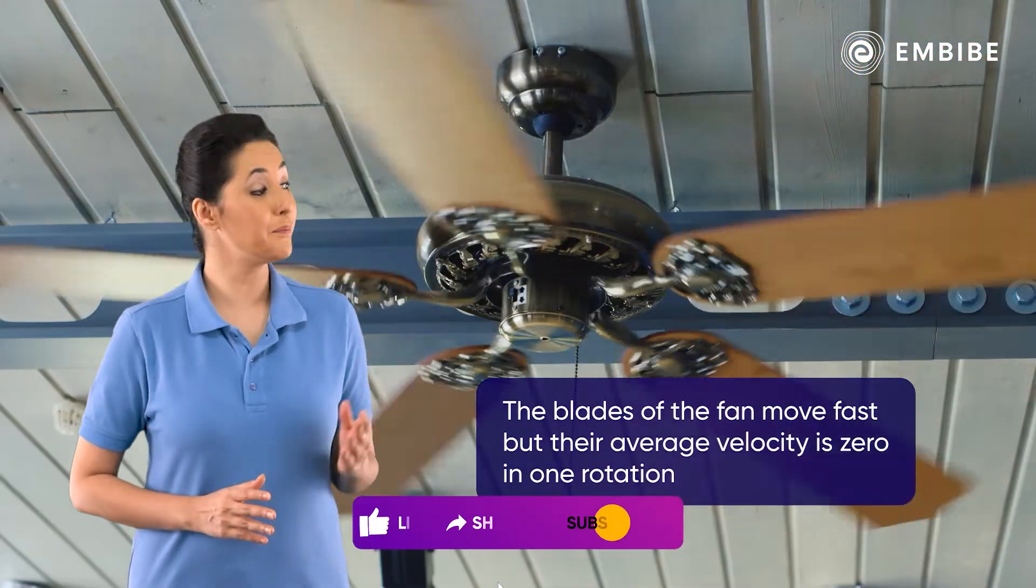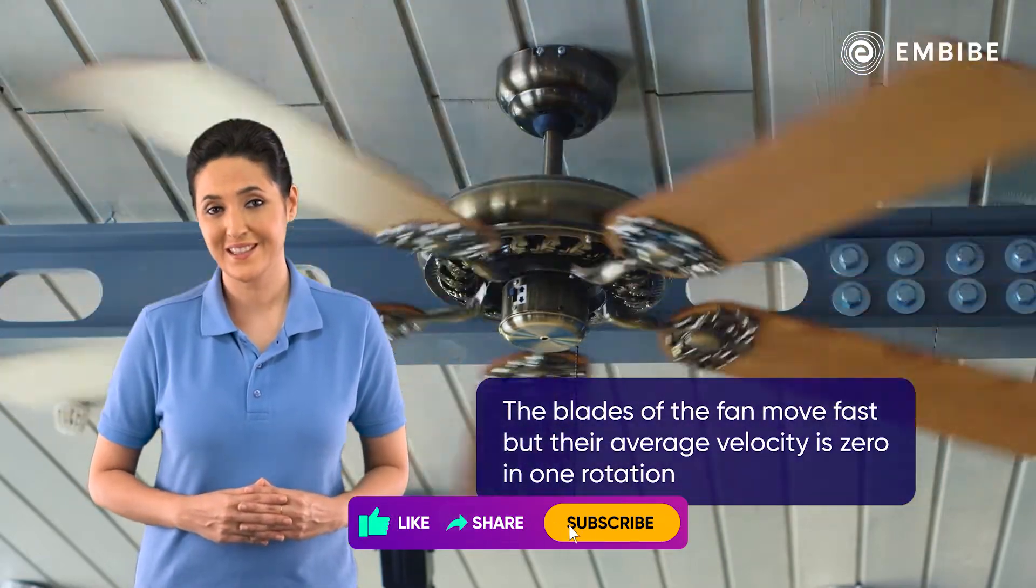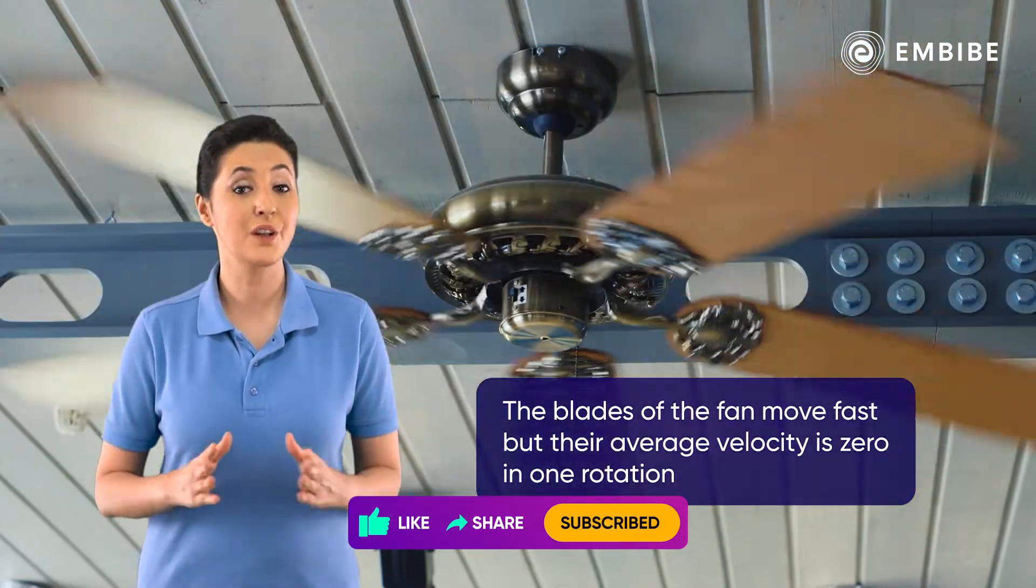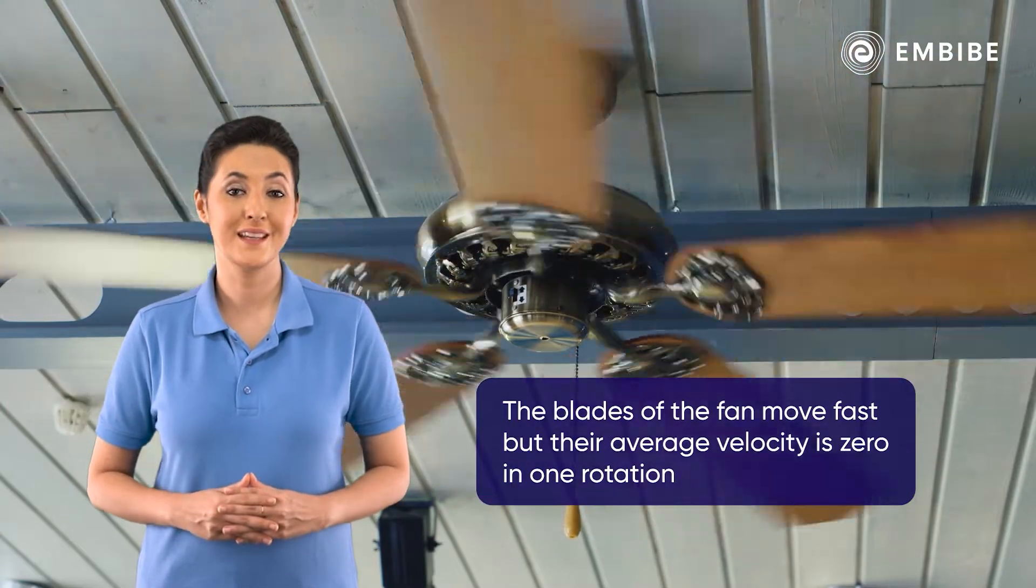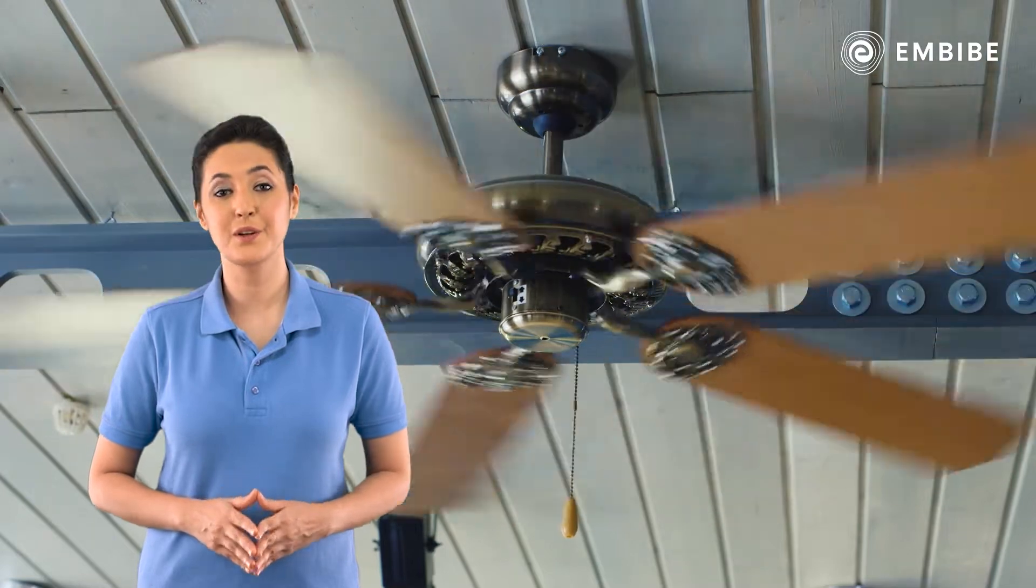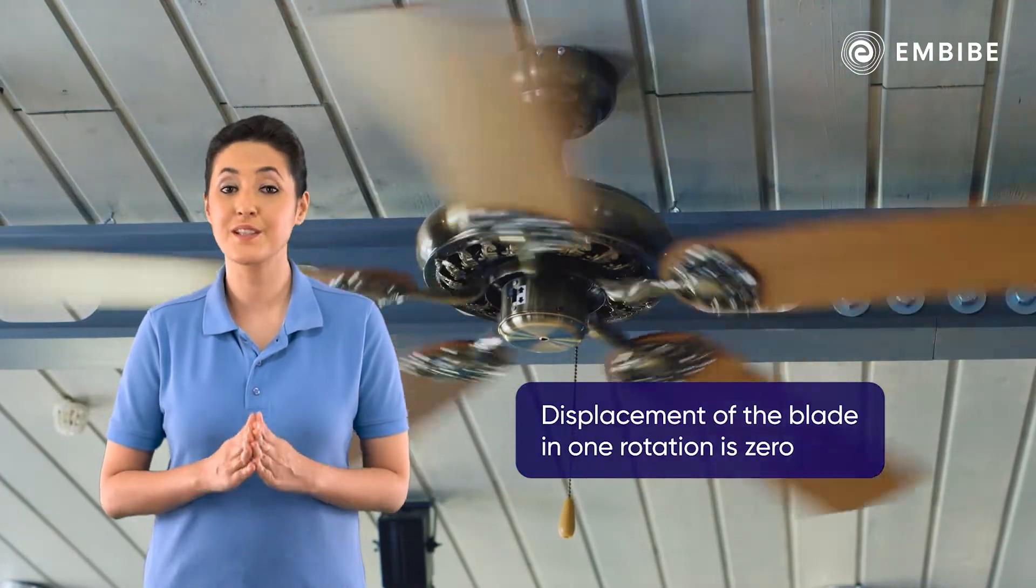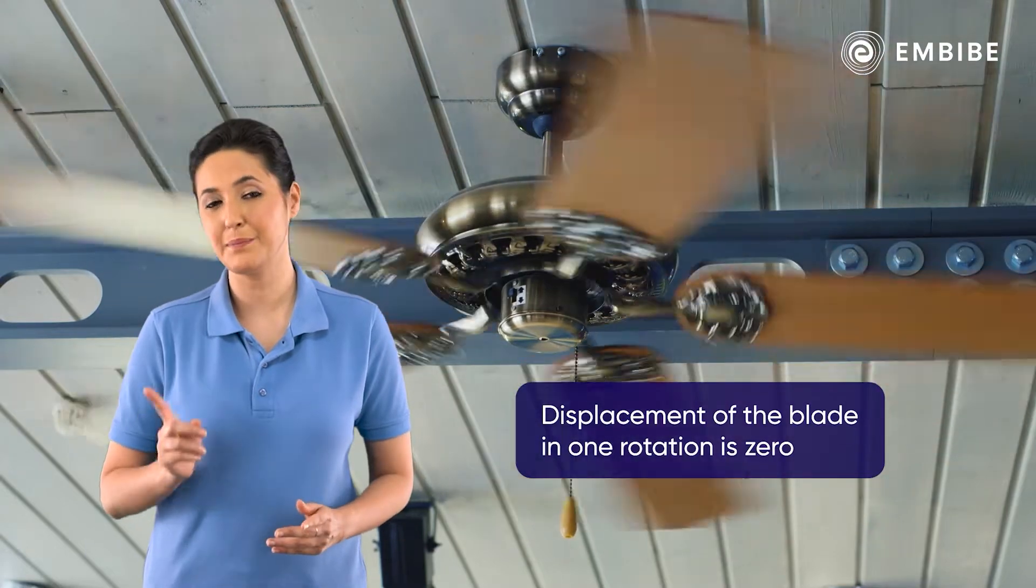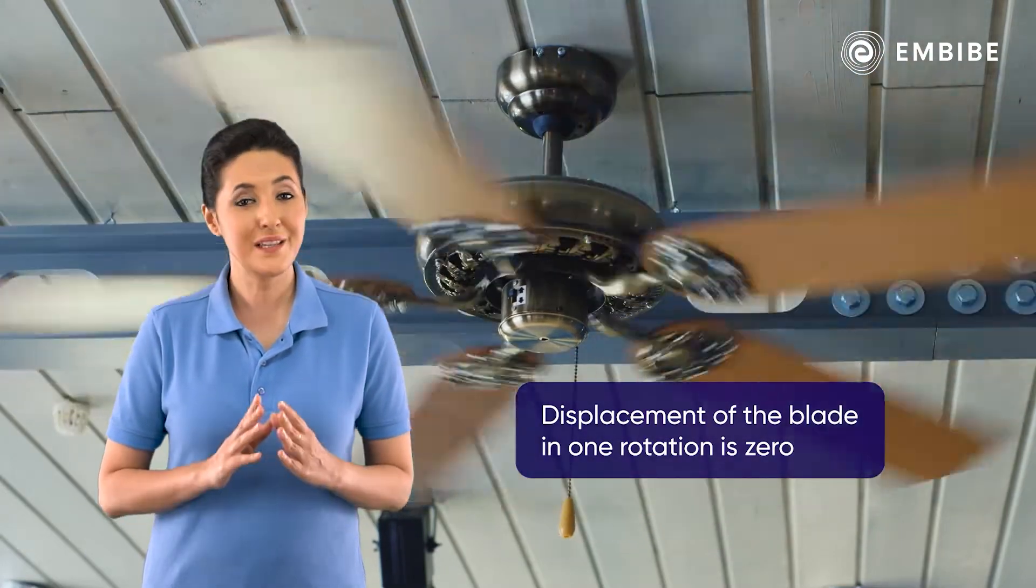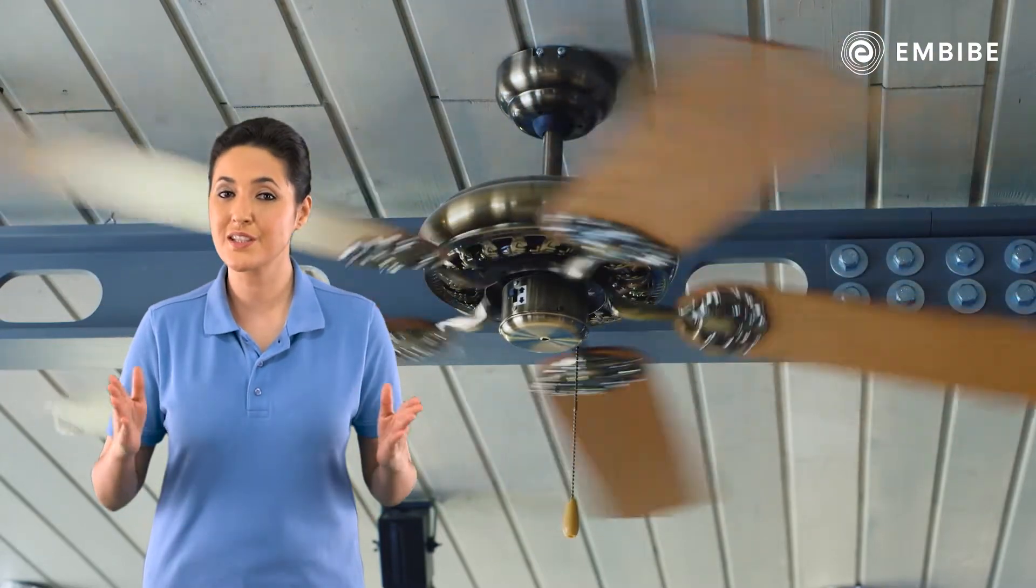You must have seen the blades of a ceiling fan move really fast, but the average velocity of the blades in one rotation is zero. This happens because the displacement of the blades is zero since they reach the same position after a complete rotation. To learn how the average velocity is related to the displacement of an object, watch this session.